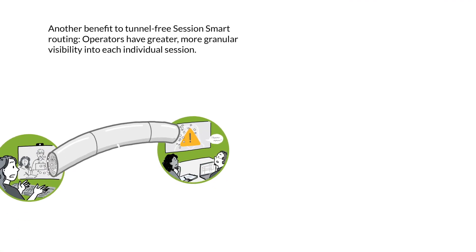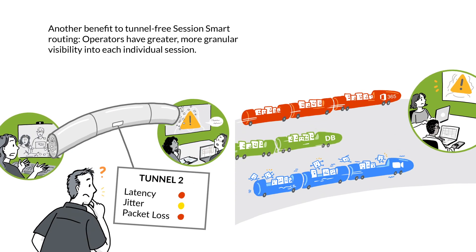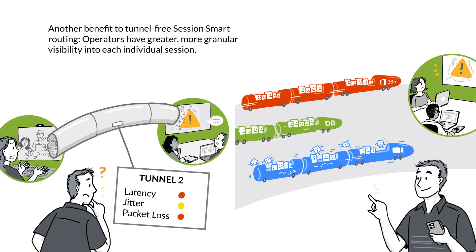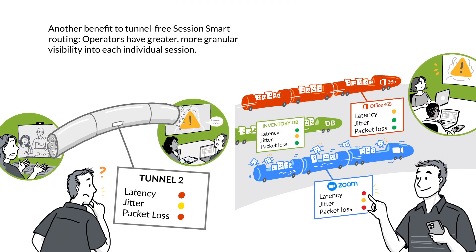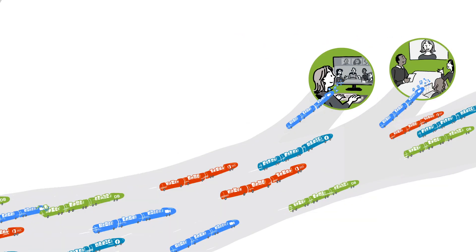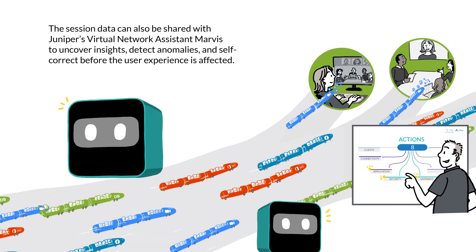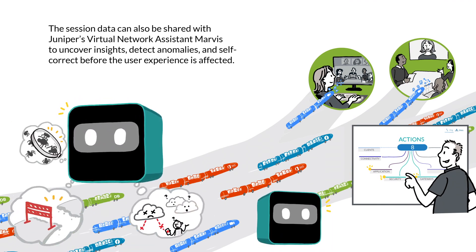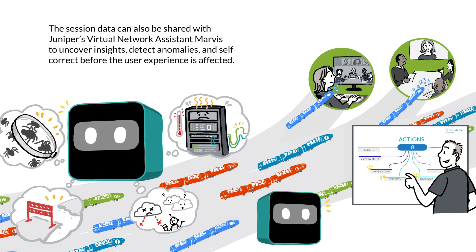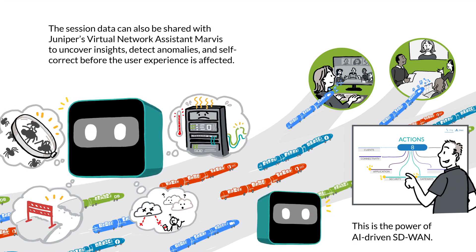Another benefit to tunnel-free session smart routing: operators have greater, more granular visibility into each individual session. The session data can also be shared with Juniper's virtual network assistant, Marvis, to uncover insights, detect anomalies, and self-correct before the user experience is affected. This is the power of AI-Driven SD-WAN.